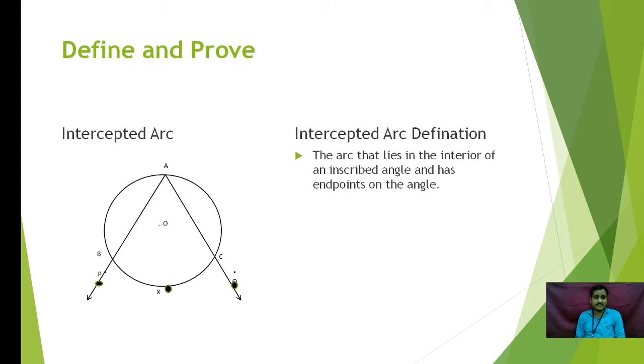Now let us understand the next concept, that is intercepted arc. Let us define it. The arc that lies in the interior part of the inscribed angle and has its endpoints on the angle is known as intercepted arc. In the diagram, you can see arc BXC has got its endpoints B and C on the angle BAC, which is the intercepted arc.